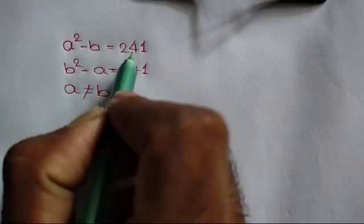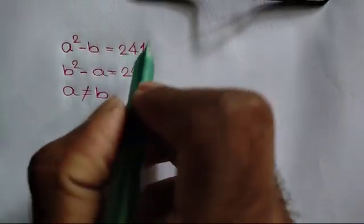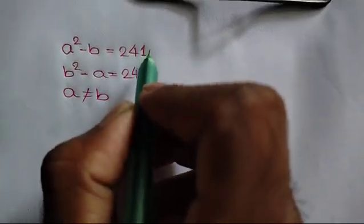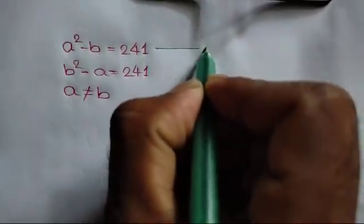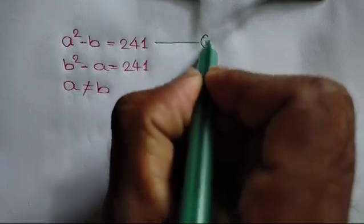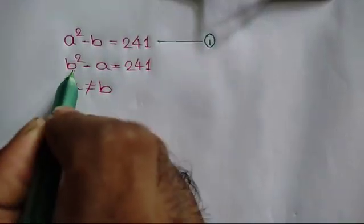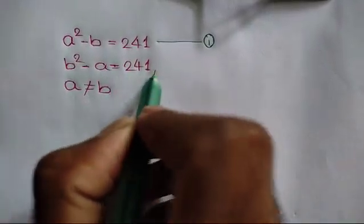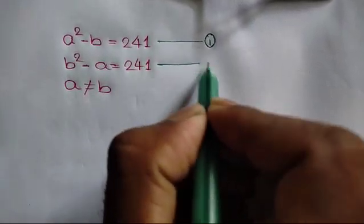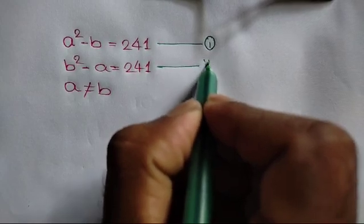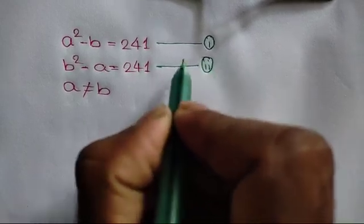Now, A squared minus B is equal to 241 — this is called equation number 1. And B squared minus A is equal to 241 — this is called equation number 2.